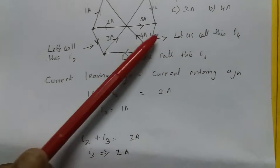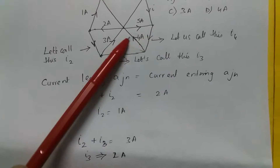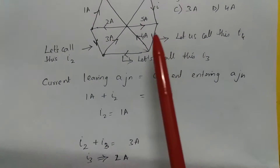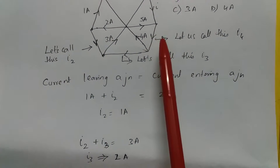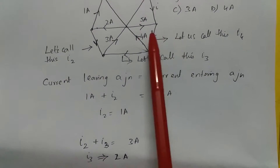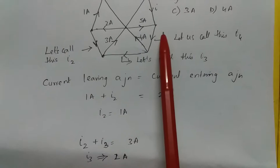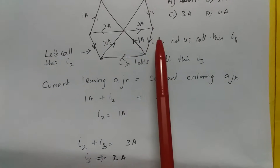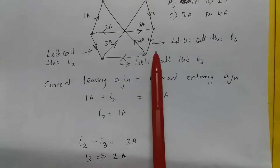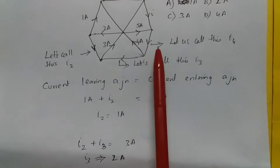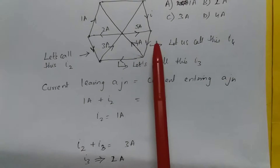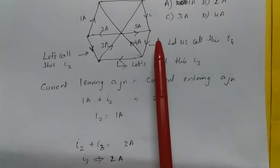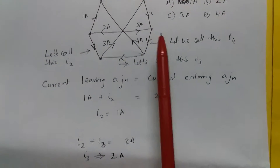Now observe this junction point. 5 amps is entering the junction, I is also entering the junction, and 6 amps is leaving the junction. So I should be equal to 1 amp. The right option is 1 amp.